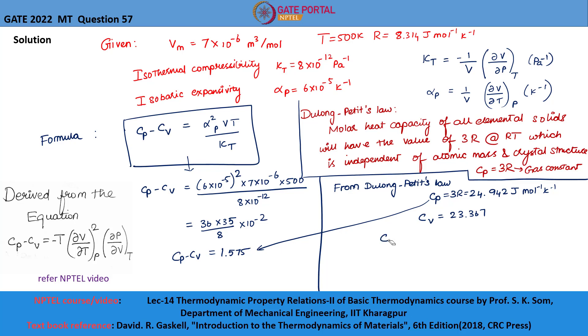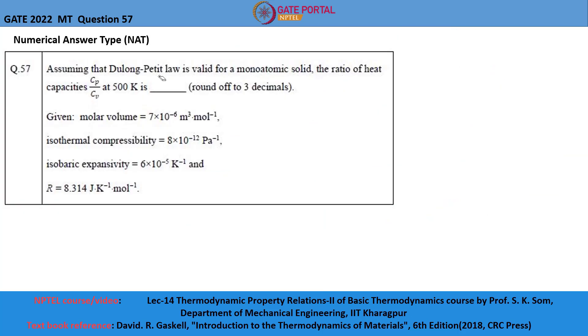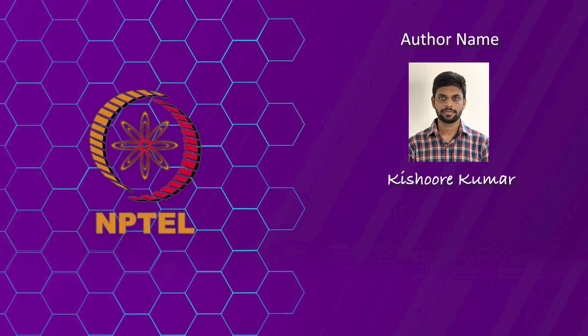We need to find the ratio between Cp and Cv, which is equal to 24.942 divided by 23.367, which is equal to 1.067. So, the ratio of heat capacities Cp by Cv is equal to 1.067.